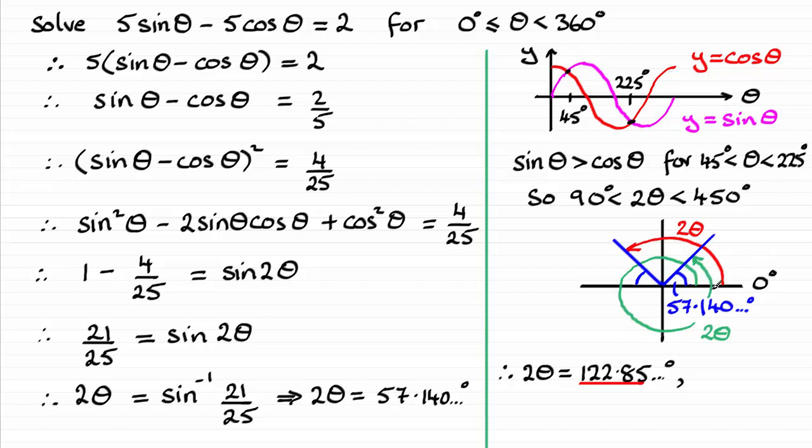And for the green one, well, that's going to be 360° plus another 57.140°, and that's going to give us 417.14 and so on degrees, and just mark that in as our green version for 2θ.